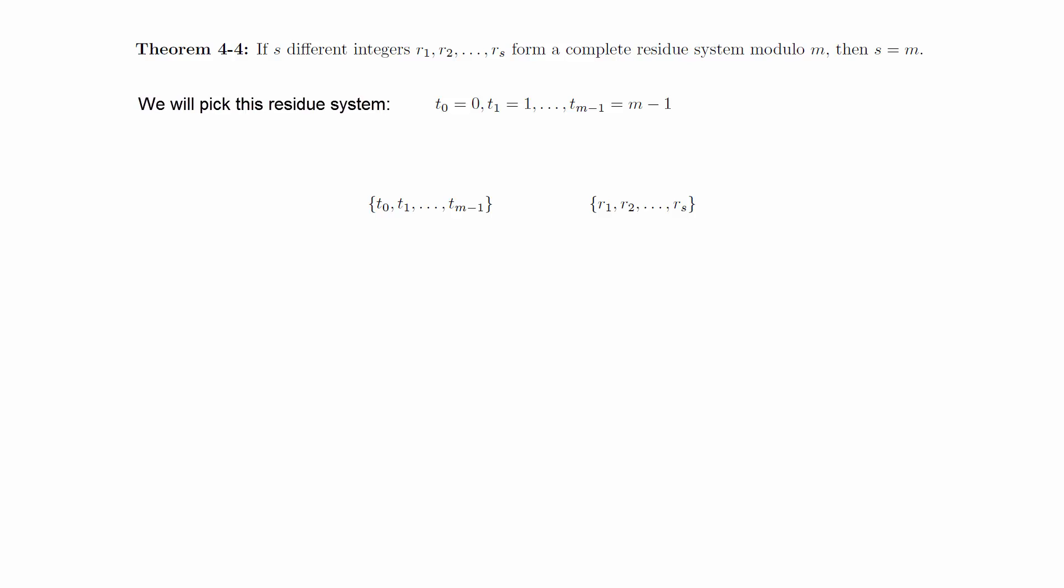Now consider the given complete residue system r1, r2, up to r sub s. We know that each r sub i is congruent to exactly one of the t sub i, since the t sub i form a complete residue system, which shows that s is less than or equal to m.